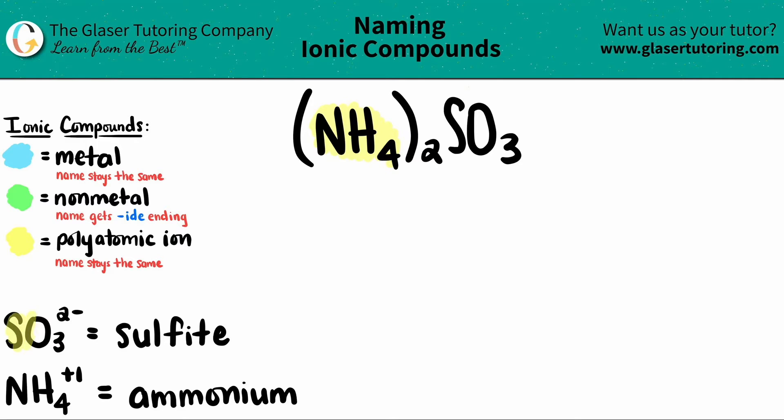And then SO3 is another polyatomic. SO3 with a negative two charge is always called sulfite. And here is the SO3.